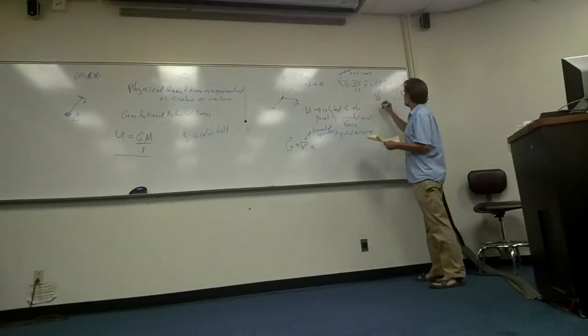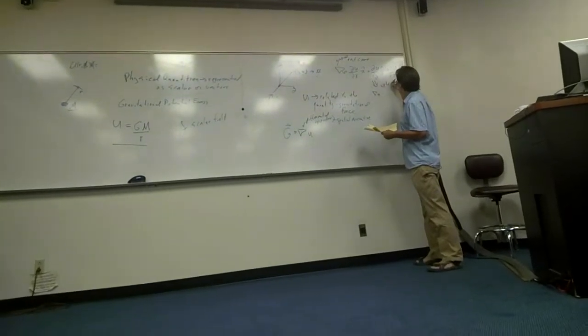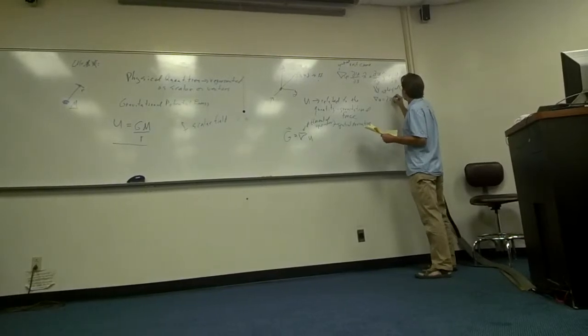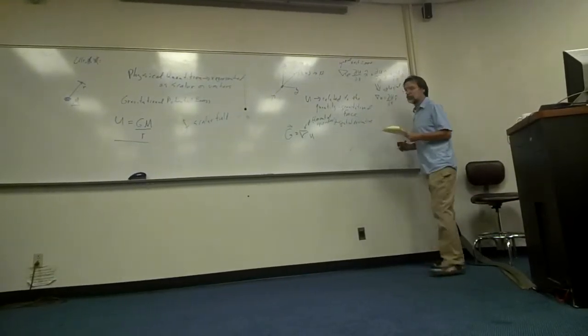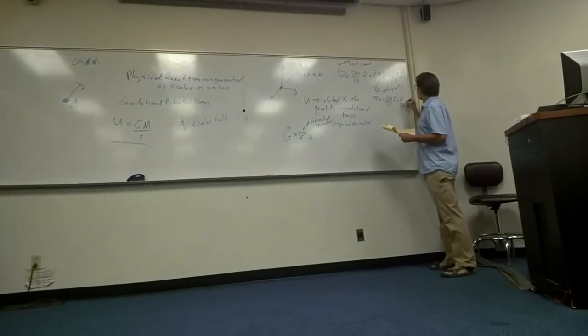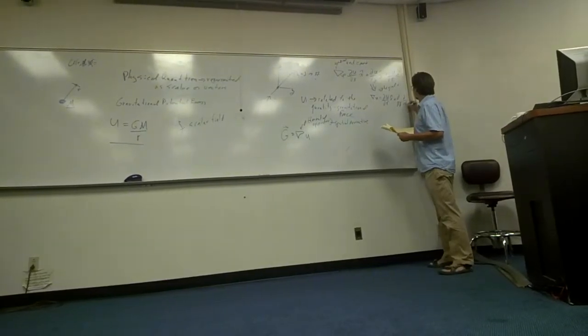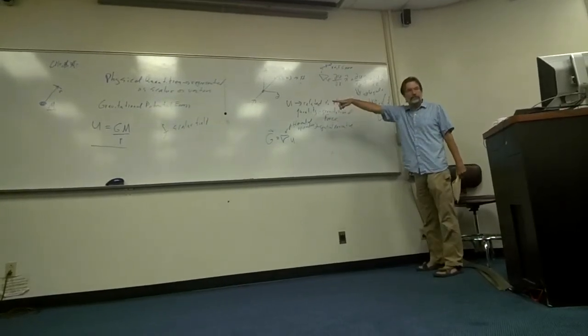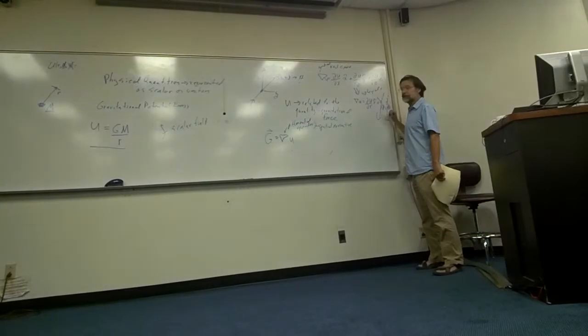that same quantity del U in spherical becomes partial of U with respect to R, R-hat, plus partials with respect to phi and partials with respect to theta, which are zero.